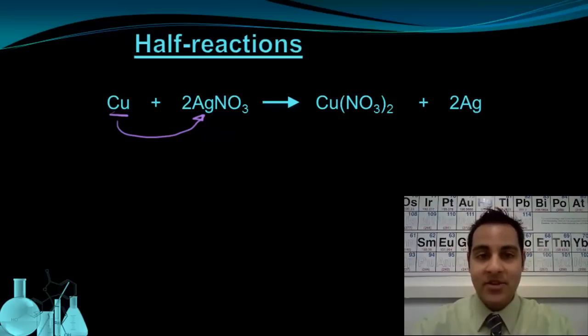Since I want to write half reactions, I need to go through and assign oxidation numbers to everything to figure out what's actually being oxidized and what's being reduced. So my first step here would be to fill in the oxidation numbers for every element that shows up here. Copper to start off is a pure element with an oxidation number of zero.